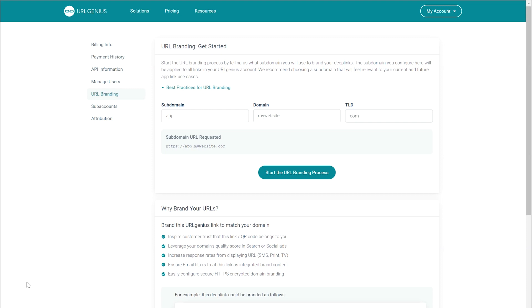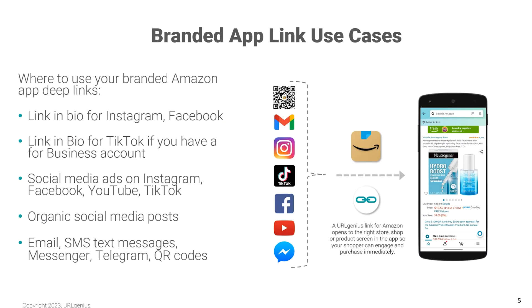Now let's consider some different ways to use branded app deep links in various marketing channels. You can use your branded app links for Amazon and other marketplaces in just about any marketing channel. Use them as the link in your bio for Instagram and Facebook. You can also use them as the link in your bio for TikTok, but only if you have a TikTok business account. Social media ads on Instagram, Facebook, YouTube, and TikTok are a really popular use case for app links that go directly to your products, your shop, or your storefront.